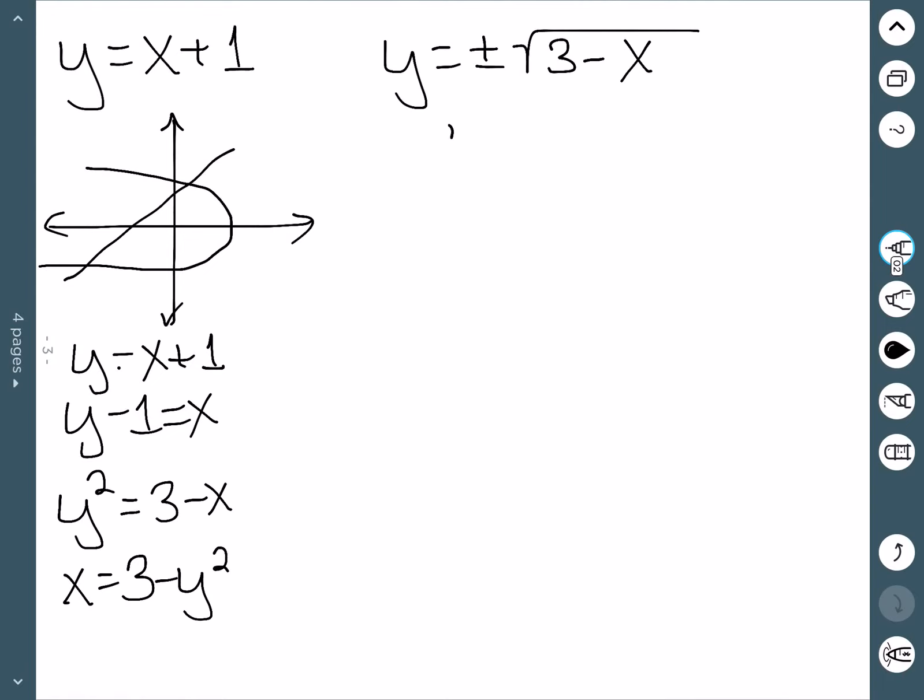And then solving would give me that x is equal to 3-y². So that does give me my functions. I know this 3-y² is on the right, and then the y-1 is on the left. I do also need to know my intersection points here.